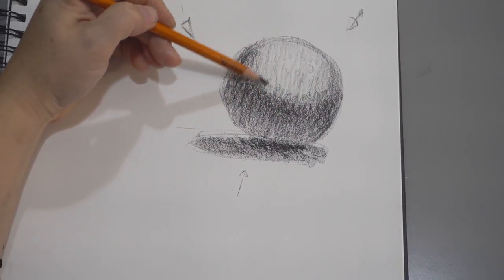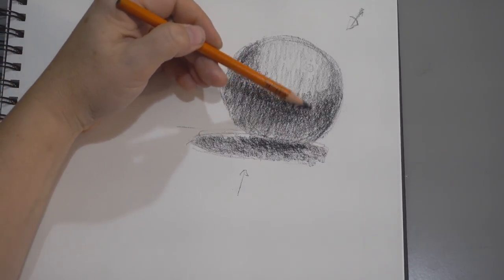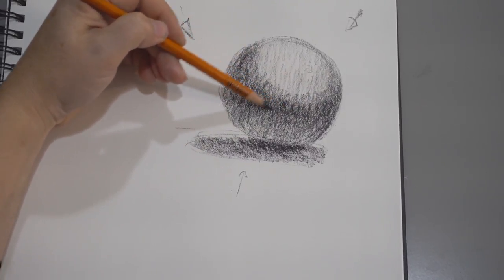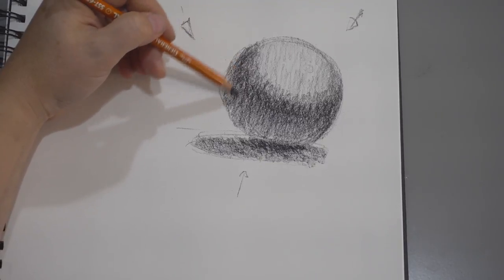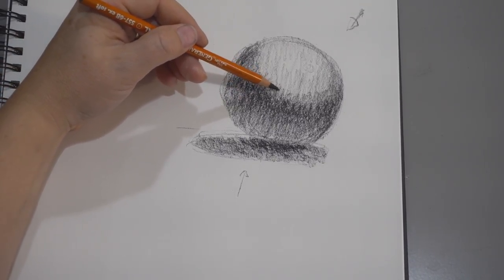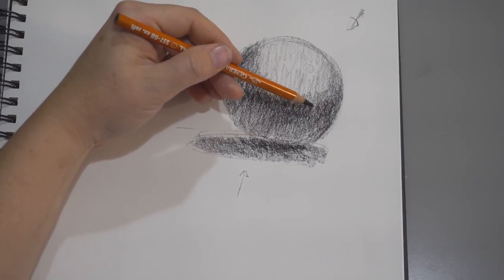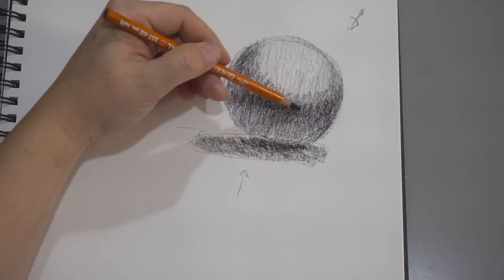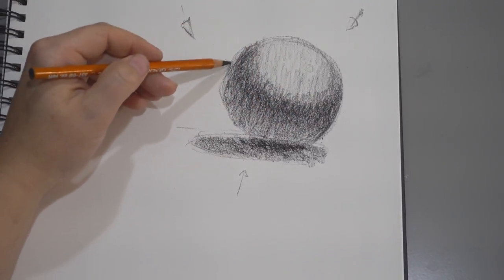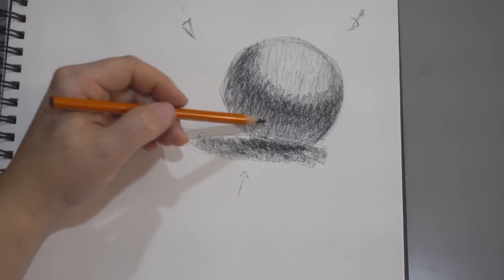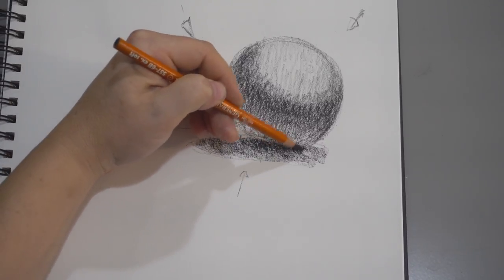I'm not going to spend a ton of time on this, but I'm going to definitely continue to work on the transitions. To get some subtlety, the softer the transition you have from the light side into the shadow side and from the core shadow into the reflected light, the more believable and the more round it will become. I'm just going to continue to work on that by doing just a general cross-hatching motion.